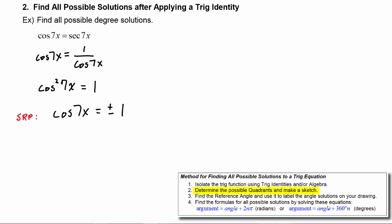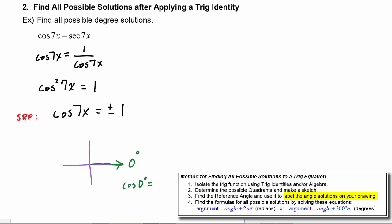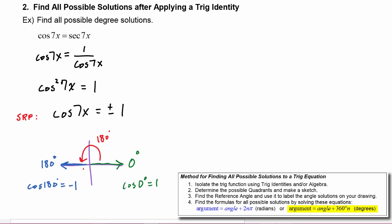Let's draw a picture here. We know that for cosine to equal one, we have to be at an angle of zero degrees — cosine of zero degrees equals one. But in our equation we could have plus or minus one, and we know that cosine is negative one at 180 degrees.